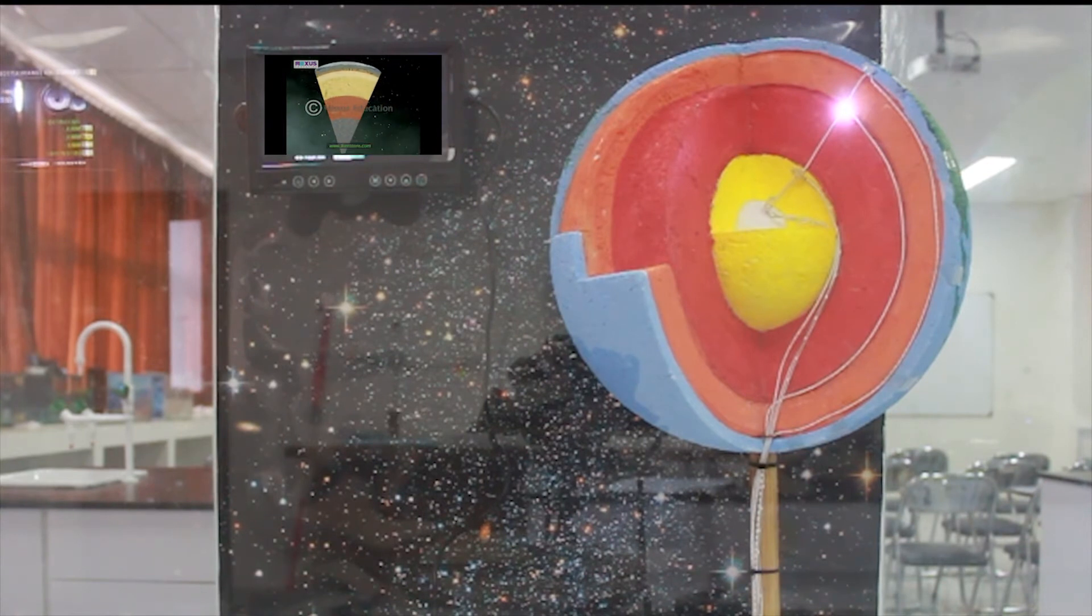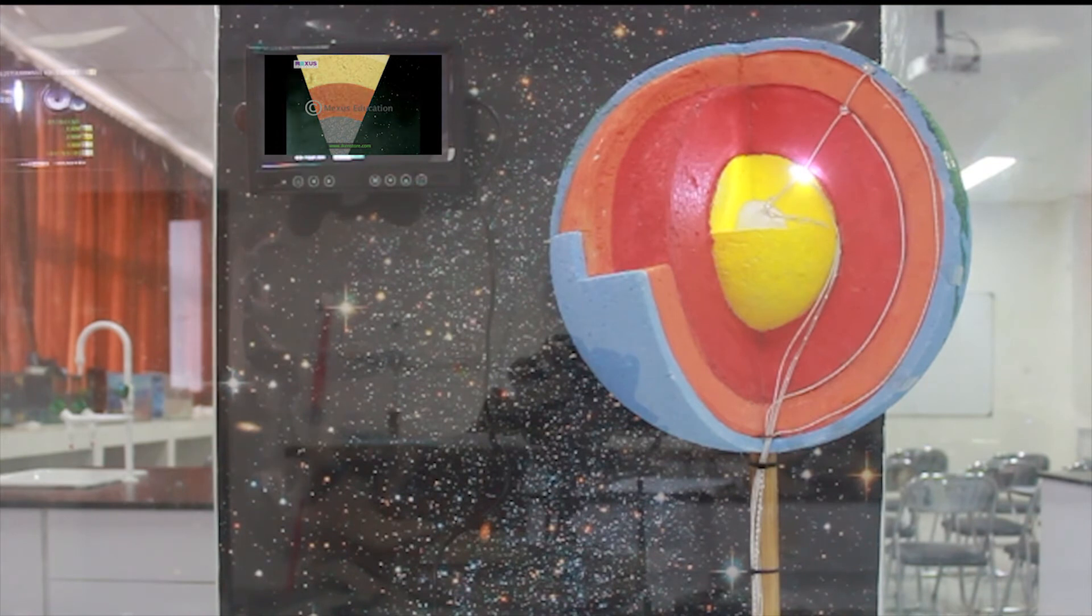The next layer of the Earth is the outer core. This layer is exceedingly hot. It has a temperature of about 5,000 degrees Celsius. The outer core consists mainly of liquid iron. It has a depth of 2,200 kilometers.